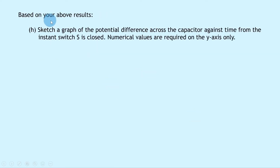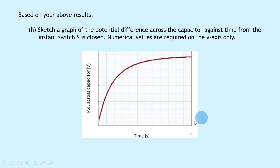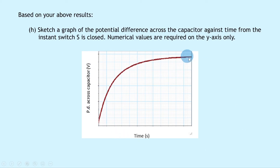Part H says to sketch a graph of the potential difference across the capacitor against time from the instant switch S is closed. Numerical values are required on the y-axis only. The graph should show potential difference across the capacitor increasing over time for the charging case, going up to a maximum value. We show this maximum value on the y-axis using a dashed line, labelled as 12 volts.